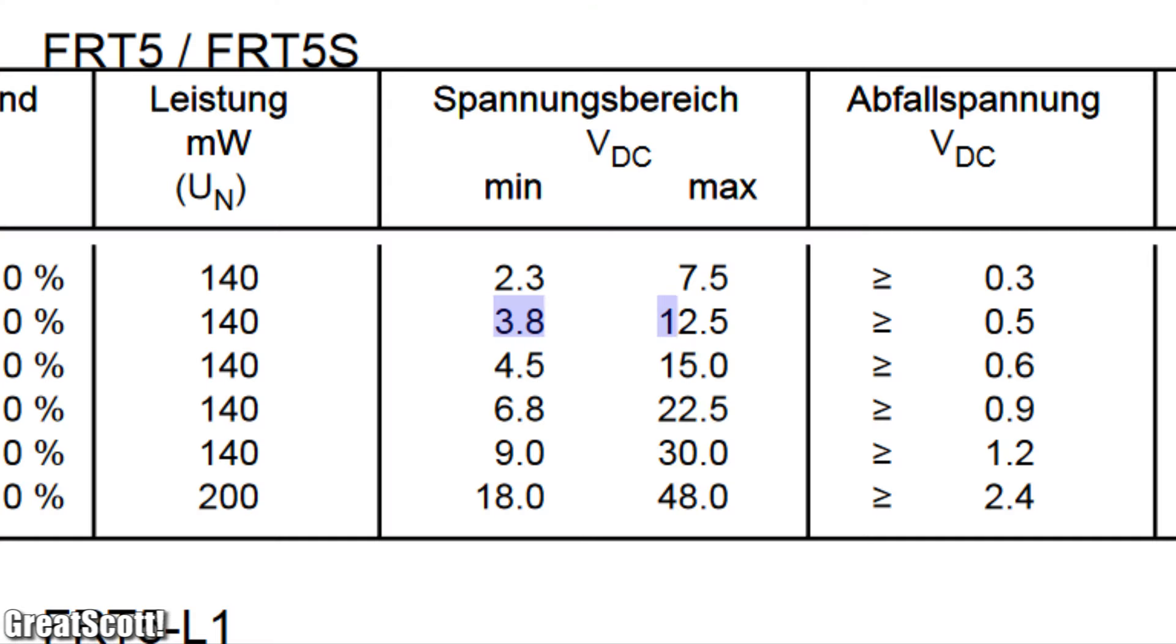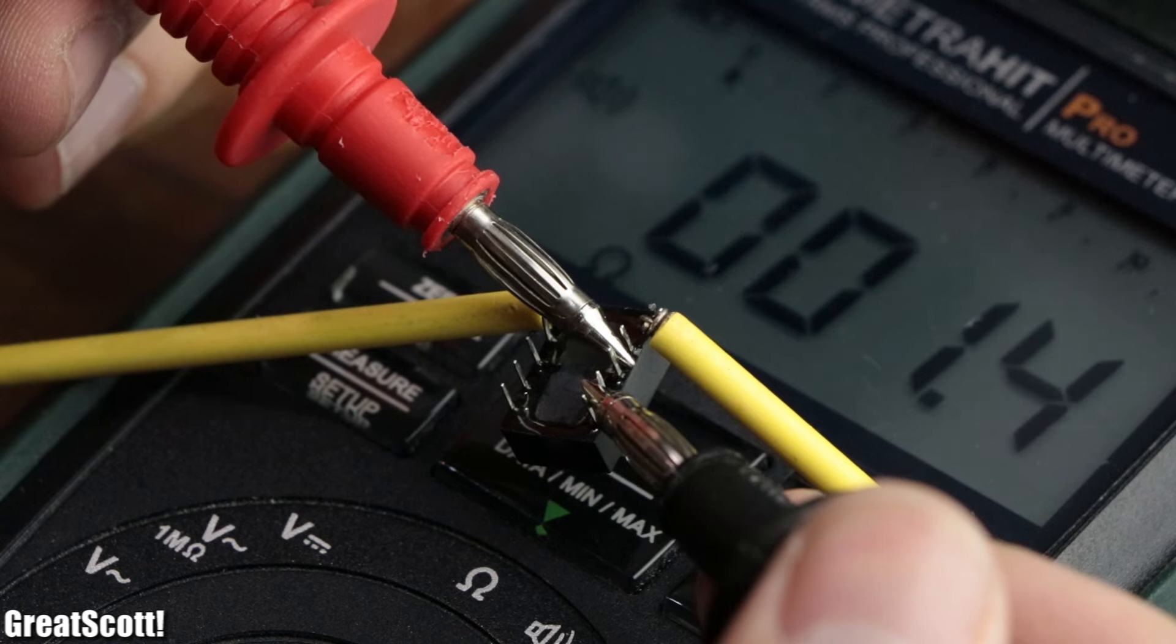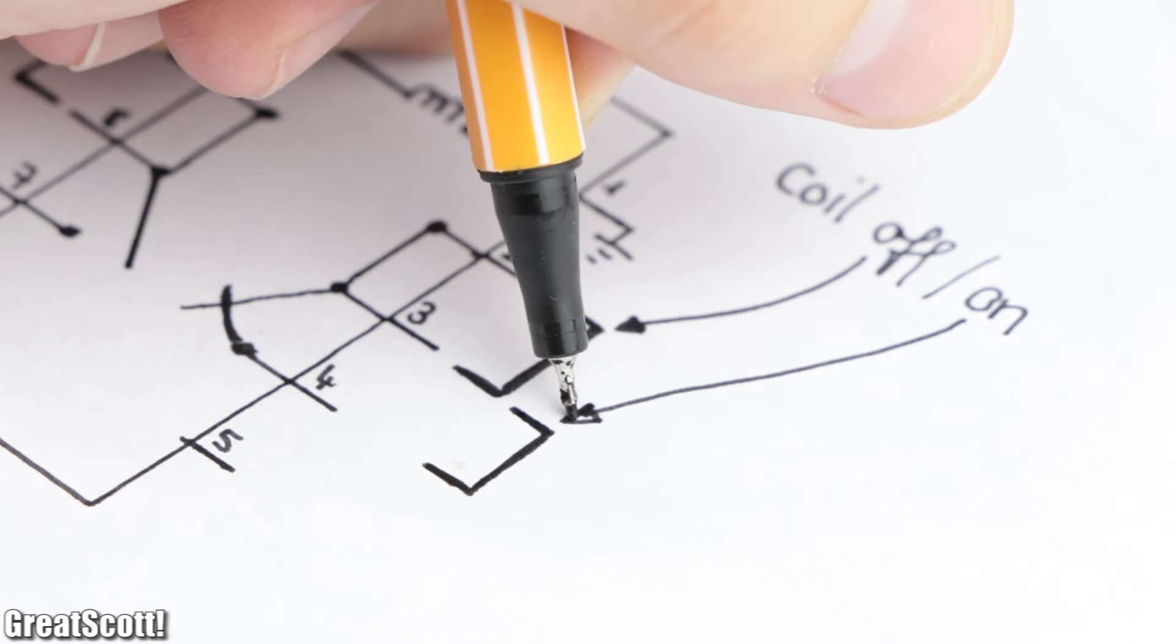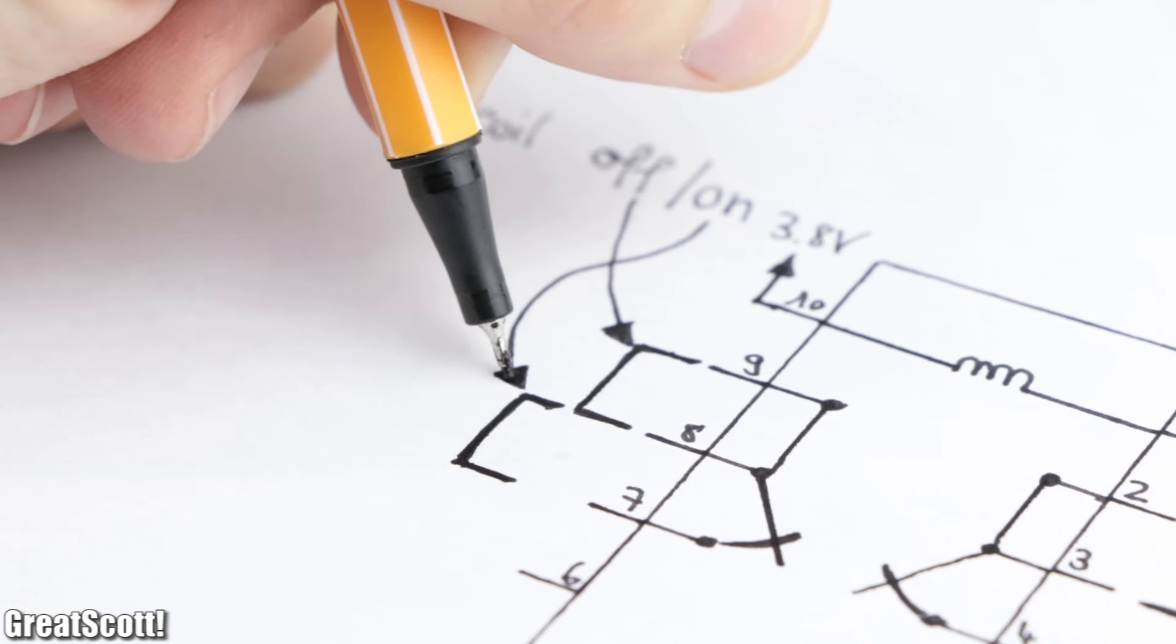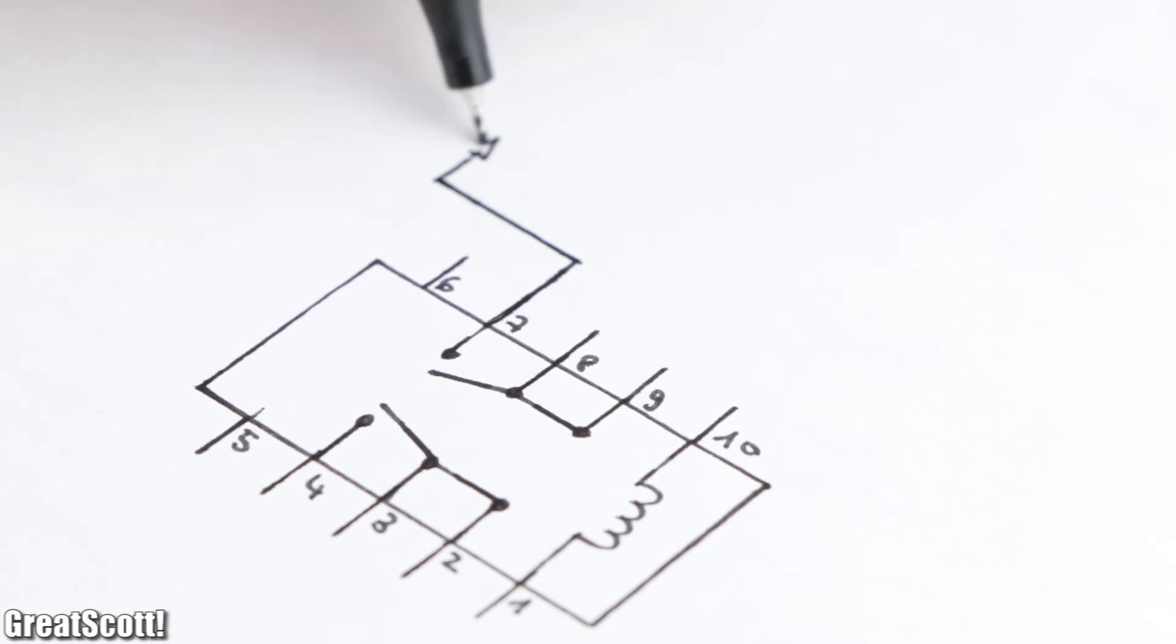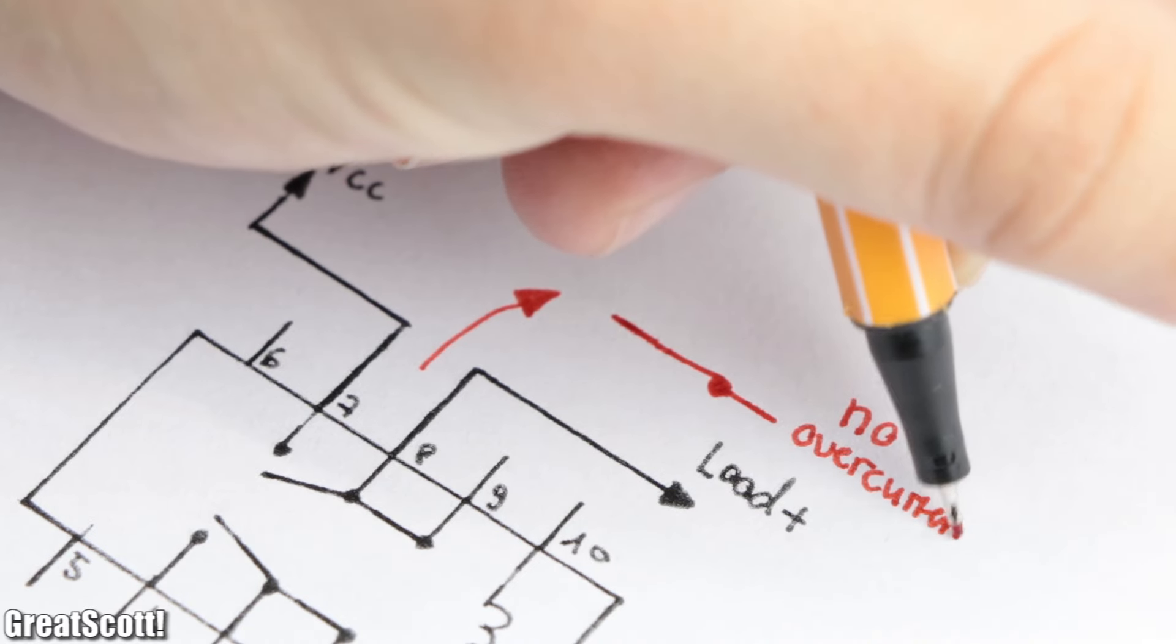But once at least 3.8 volts is connected to the coil, the contacts close/open and now pin 3 and 4 and pin 8 and 7 are connected to one another. So we can use one of the changeover contacts to connect the supply voltage to our circuit when there is no overcurrent and open the contacts when there is overcurrent.